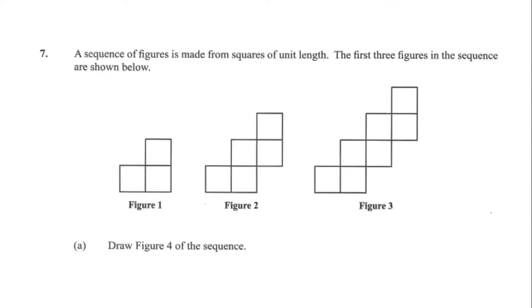Question 7 says a sequence of figures is made from squares of unit length. The first three figures in the sequence are shown below. Part A says draw figure 4 of the sequence.